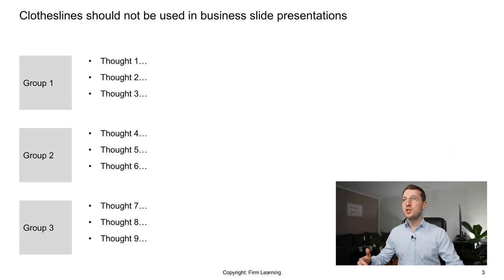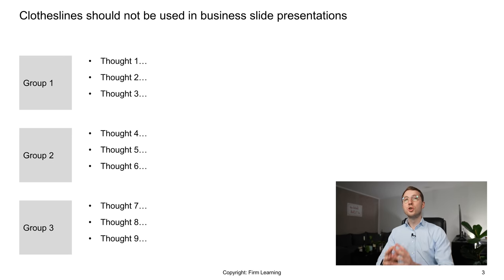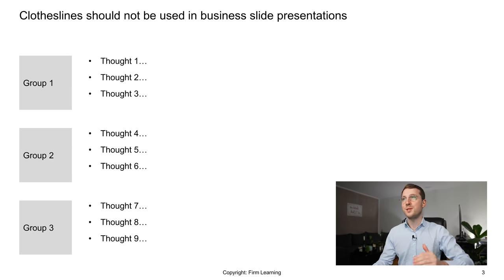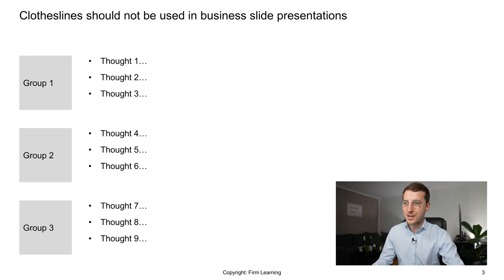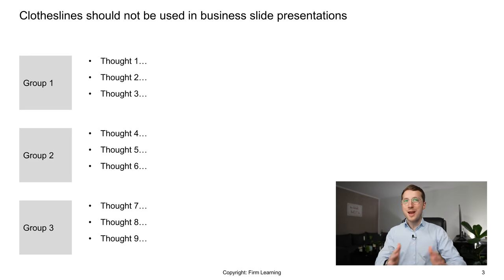My first recommendation is that you should always come from a structure. When you talk about a topic, there are two or three main areas to consider, and within those, your specific thoughts. Whenever you have a list of bullets, you should group and cluster them, then include those groups on the slide to communicate the structure — so you can say: I looked at this topic and identified three main clusters.